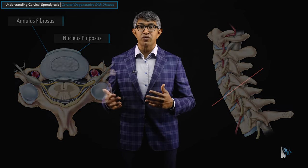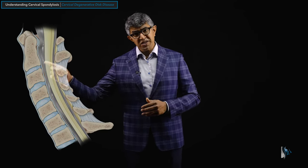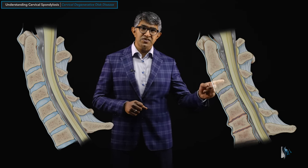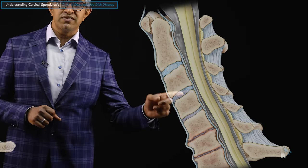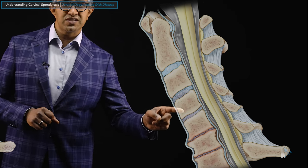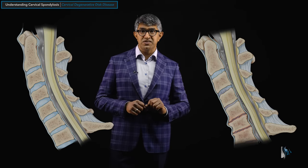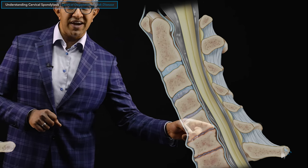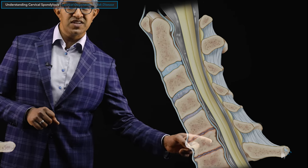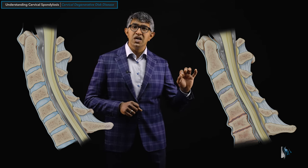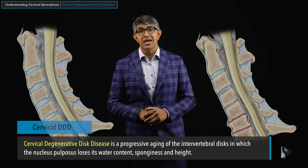Both parts of the disc wear out in different ways. This sagittal slice shows the discs themselves — these are nice healthy-looking discs. An illustration shows increasing degeneration: the top disc looks pretty healthy, but you start seeing water content and sponginess disappear, then height loss, until the cushion is really absent between C5, C6, and C7, with reactive changes in the vertebral bodies and bony end plates.